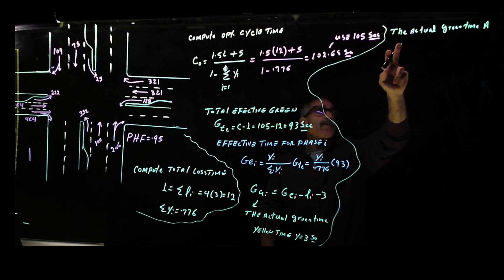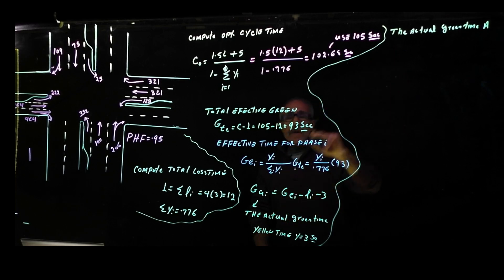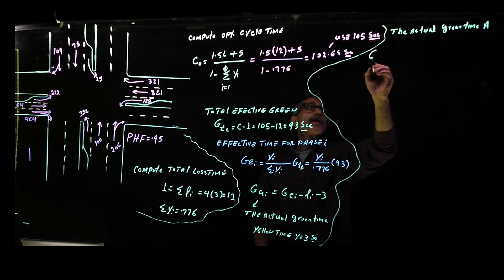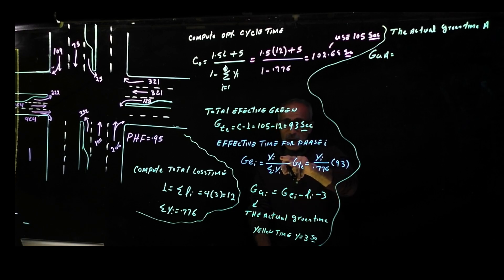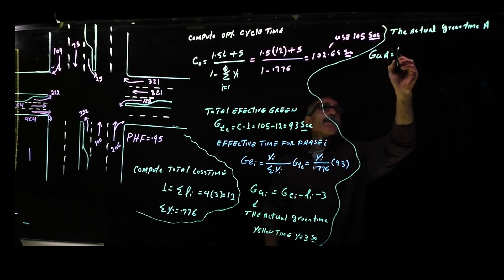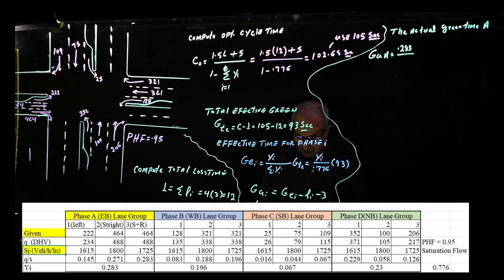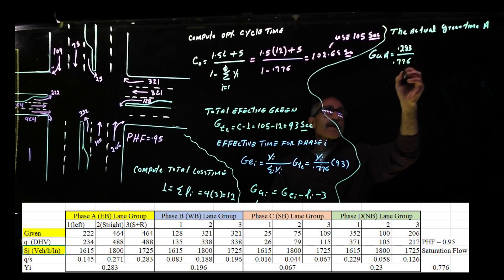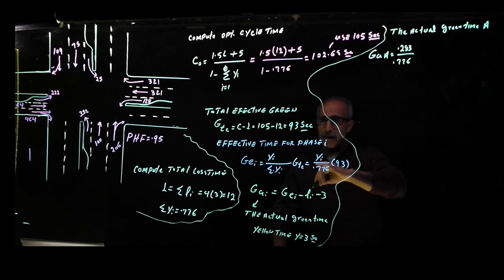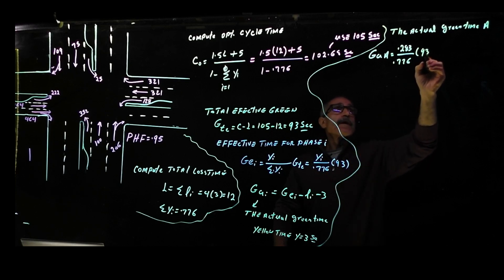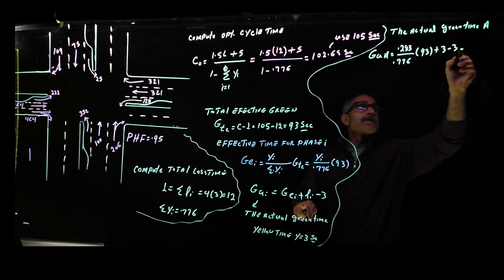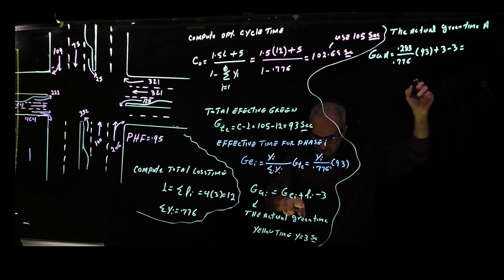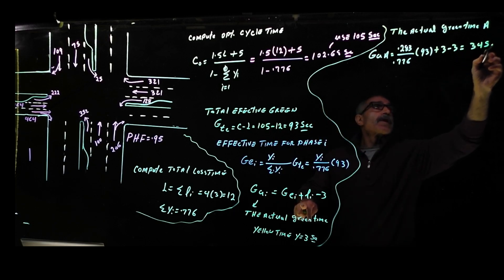I'm going to calculate the actual green time for phase A. GAA equals, and our number for Yi for that phase using the Excel, the highest one came out to be 0.283, divided by the total 0.776, and we're going to multiply by 93, then plus 3 minus 3, and that will give us almost 34 seconds.